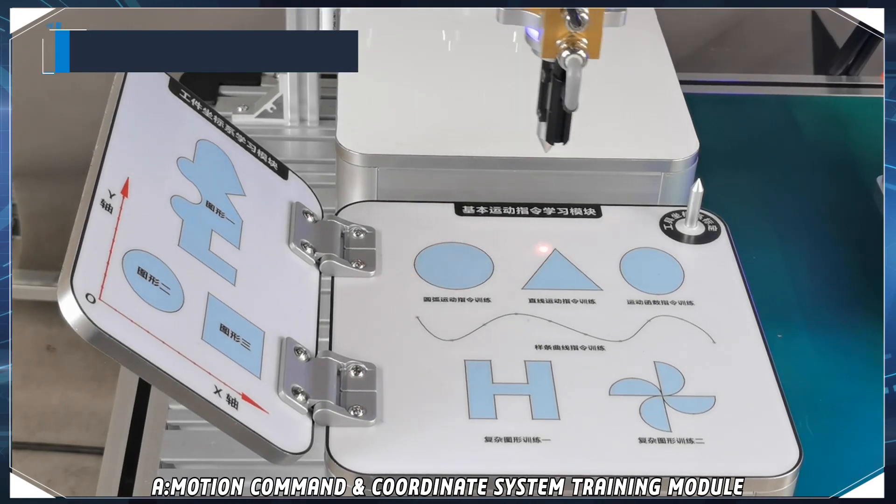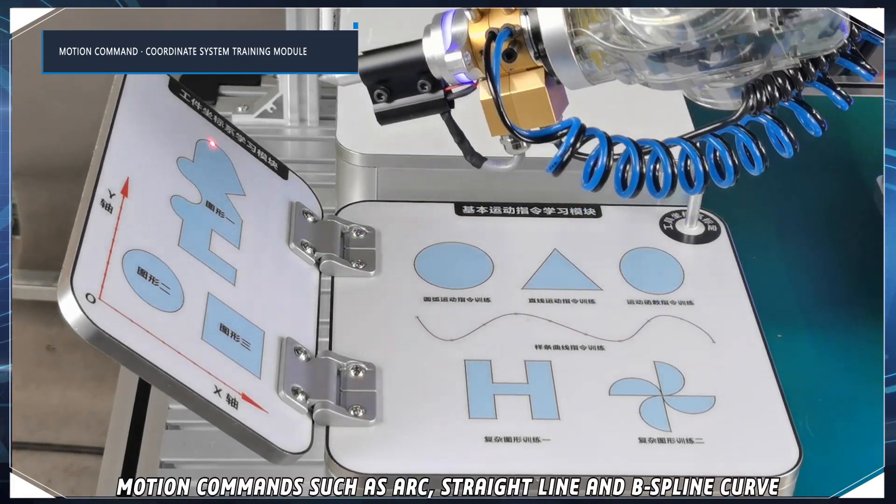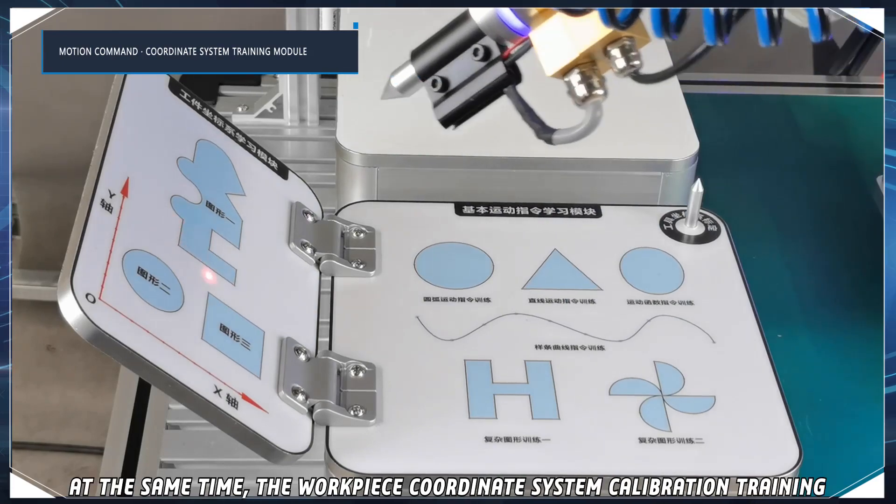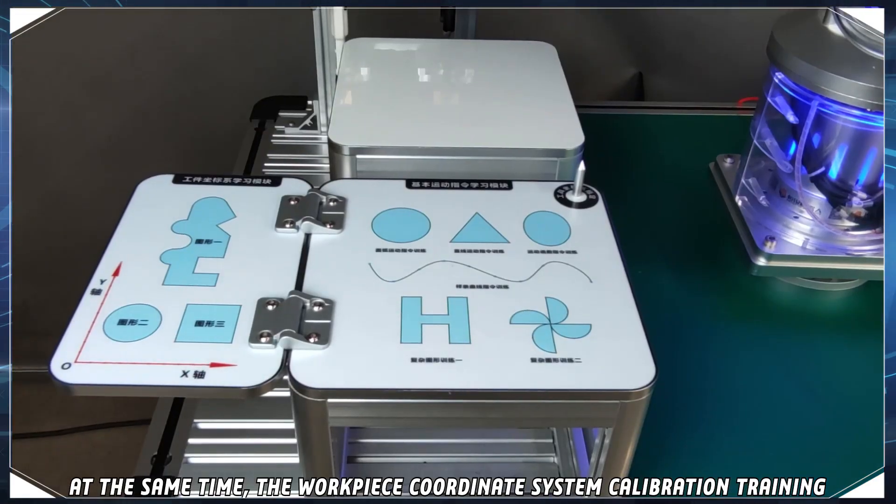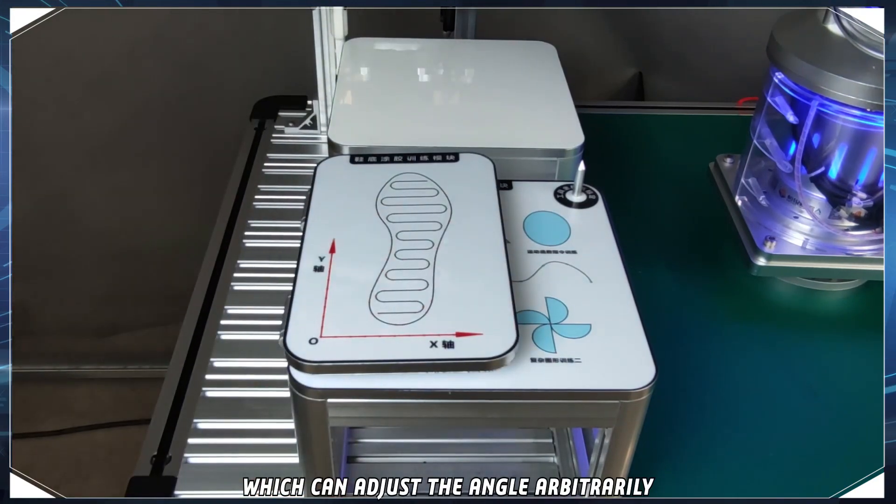Motion command coordinate system training module. The module uses laser to draw patterns to complete the training of basic motion commands, such as arc, straight line, and B-spline curve. At the same time, the workpiece coordinate system calibration training can be carried out with the help of the training board, which can adjust the angle arbitrarily.